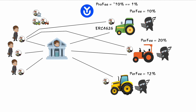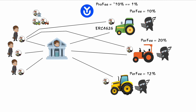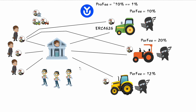One benefit of a single vault token is fewer taxable events. If Dollar Bill moves Caesar tokens from the green strategy to the red strategy himself, closing and opening positions can be taxable events in many jurisdictions. But if the vault is the one opening, closing, and moving positions, all he's doing is holding a token that goes up in value — and he doesn't have to claim capital gains until he actually sells it. I'm not an accountant, so check on that, but it's a real benefit.